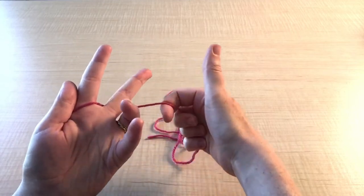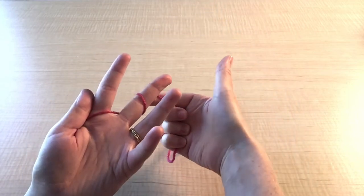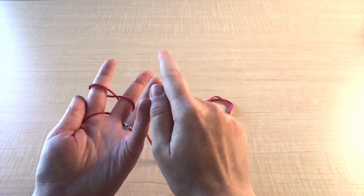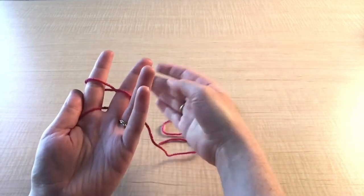Wind the yarn under and around your middle finger and then under and around your pointer finger. You will now have two loops on your fingers.